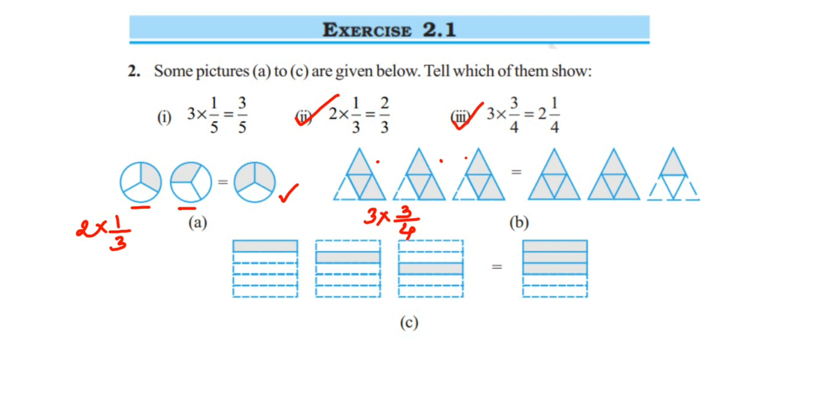Then the next one, we have squares. The square is divided into five equal parts - 1, 2, 3, 4, 5 - and in each square one part is shaded. In the other two squares also one part is shaded. So the shaded portion will be 1/5. Like that, we have three different squares, so it will be 3 × 1/5.